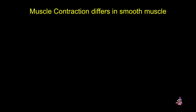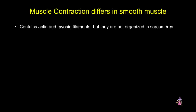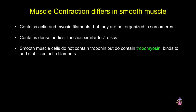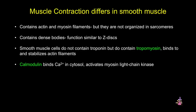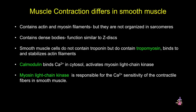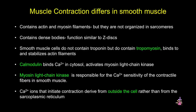We'll now look at muscle contraction in smooth muscle. Smooth muscle contains actin and myosin filaments, but they are not organized in sarcomeres. Instead, smooth muscle contains dense bodies, which contain alpha-actinin just like a Z-disc and function similarly. There's no troponin in smooth muscle cells, but they have tropomyosin, which still binds to and stabilizes actin. Instead of troponin, there's a protein called calmodulin, which binds calcium in the cytosol and activates myosin light chain kinase — responsible for the sensitivity of the contractile fibers in smooth muscle. Calcium ions that initiate contraction come primarily from outside the cell, which is different from skeletal muscle; this is also true for cardiac muscle.